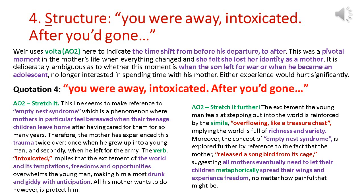For structure, we're going to look at the quotation 'you were away, intoxicated. After you'd gone.' The full stop after intoxicated is an example of Weir using a volta, and that volta indicates the time shift — from before her son's departure to after. It's a significant turning point in the poem and a pivotal moment in the mother's life when everything changed. It's deliberately ambiguous as to whether the moment she's referring to is when her son left for the war, or when he became an adolescent.